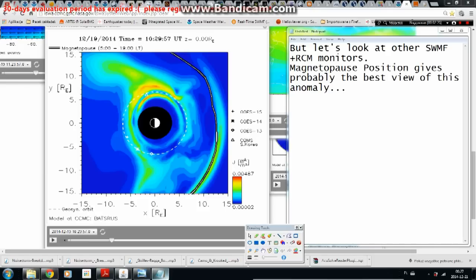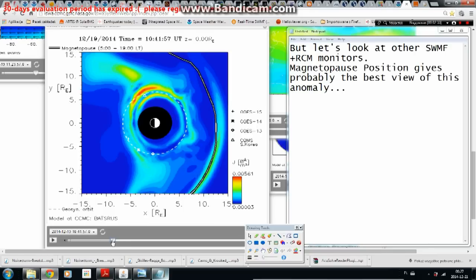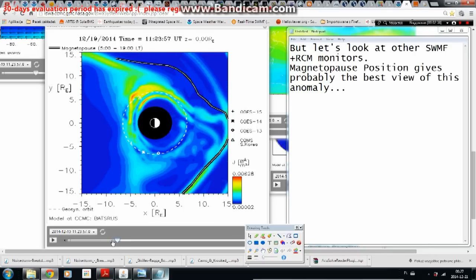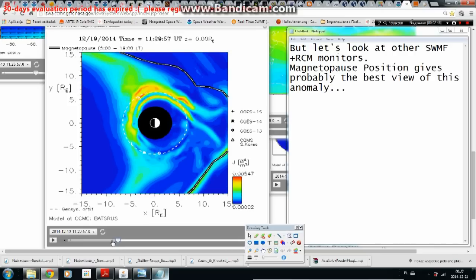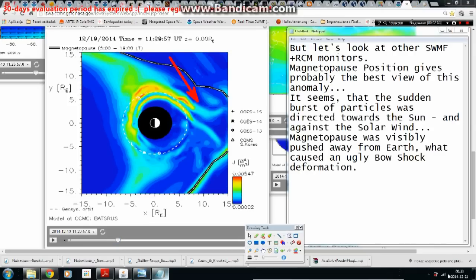Magnetopause position gives probably the best view of this anomaly. It seems that the sudden burst of particles was directed towards the sun and against the solar wind. Magnetopause was visibly pushed away from Earth what caused an ugly bow shock deformation.